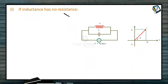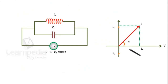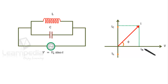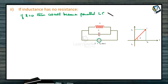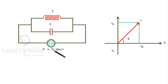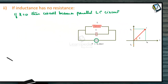If the inductance has no resistance — that is, if R equals zero — then the circuit becomes a pure parallel LC circuit. In this case, IR equals zero, and only XL and XC are present. The condition of resonance is when IL equals IC, that is, V by XC equals V by XL, which implies XC equals XL.